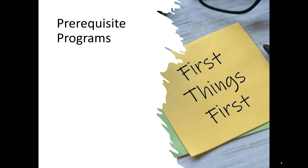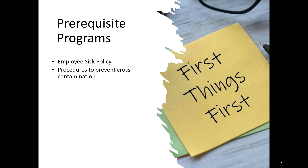What are prerequisite programs? Well, there are some common ones that most food businesses would have in place. Number one would be your employee sick policy. You need to have a policy outlining what happens if an employee is sick. Because if they come into work sick, they could cough over the food, and therefore contaminate it with potential microbial hazards, which you don't want.